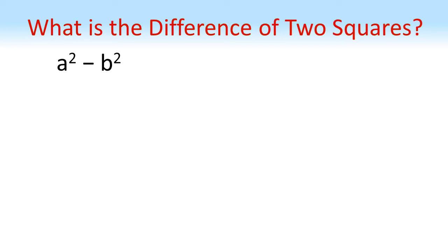we can rewrite this as a squared minus ab plus ab minus b squared. So we've just put a minus ab and a plus ab in the middle.